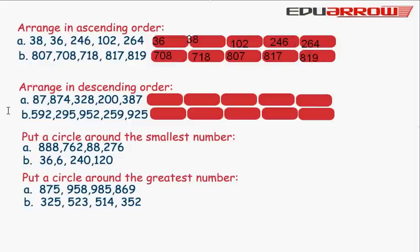Arrange in descending order. In descending order, first we start from the greatest number. We write here 874.